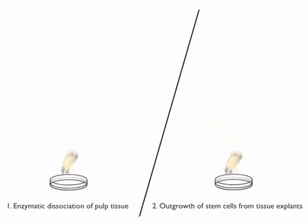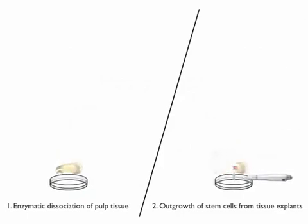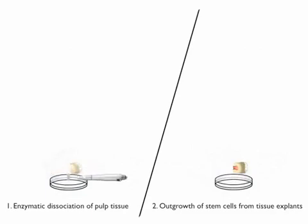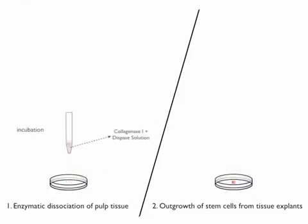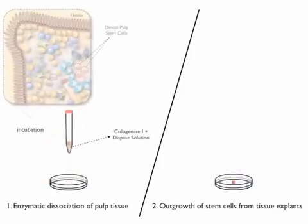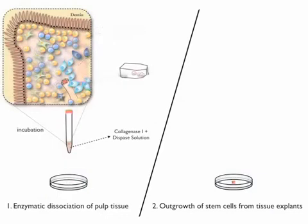At the beginning, dental pulp stem cells (DPSCs) are isolated by two different methods. In the first method, pulp tissues are enzymatically digested by incubating in collagenase type 1 plus T-space solution. These cells are called ED, referring to the enzymatic digestion isolation method.